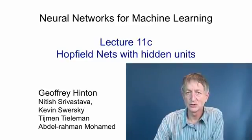In this video, I'm going to explain a very different way of using Hopfield's energy function. We add some hidden units to the network, and what we try and do is make the states of those hidden units represent an interpretation of the perceptual input that's shown on the visible units. So the idea is that the weights between units represent constraints on good interpretations, and by finding a low energy state, we find a good interpretation of the input data.